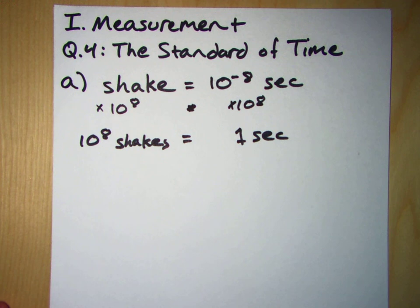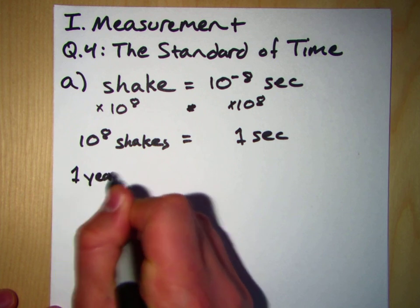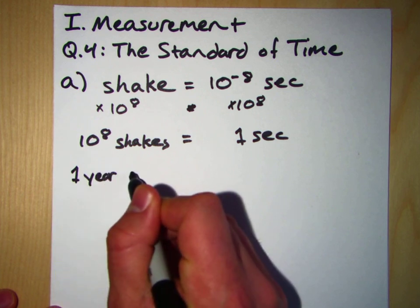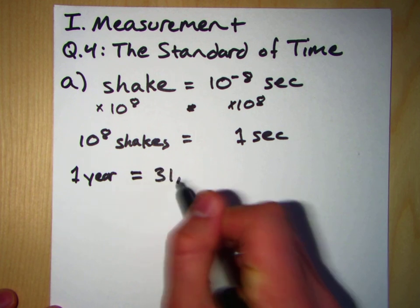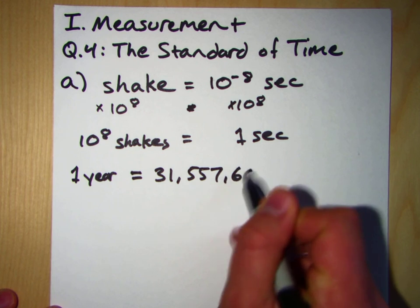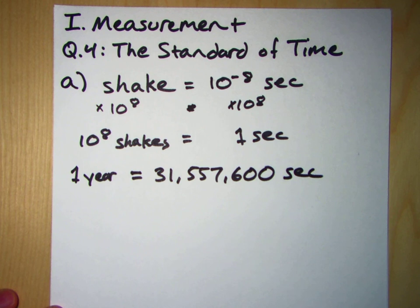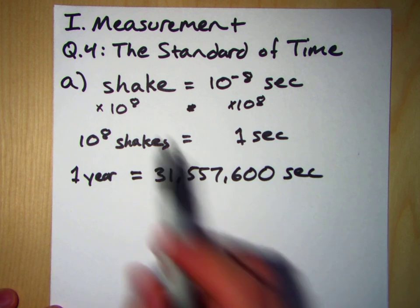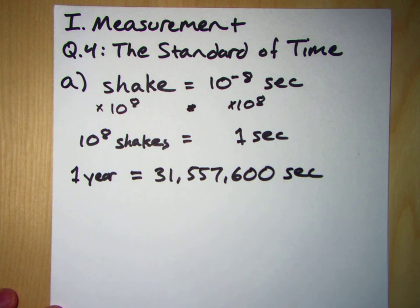Well if you look at the previous problem I did, question three, we found that a year was equal to just 31,557,600 seconds. So to answer this question, there are more shakes in a second than there are seconds in a year. So I guess the answer to this question is yes.